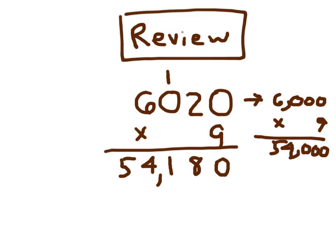And that's how we multiply with zeros by a single digit.